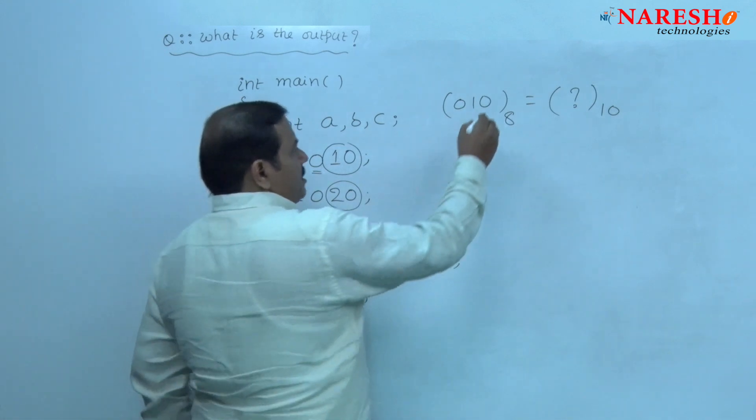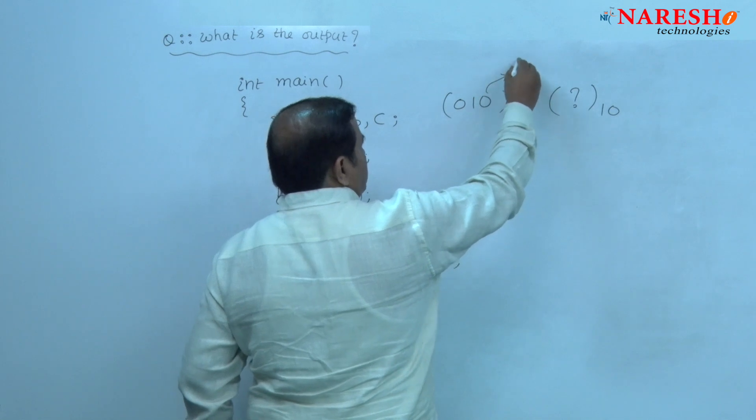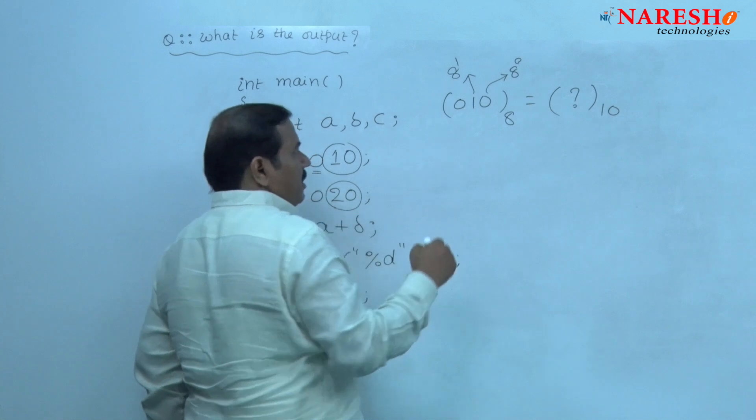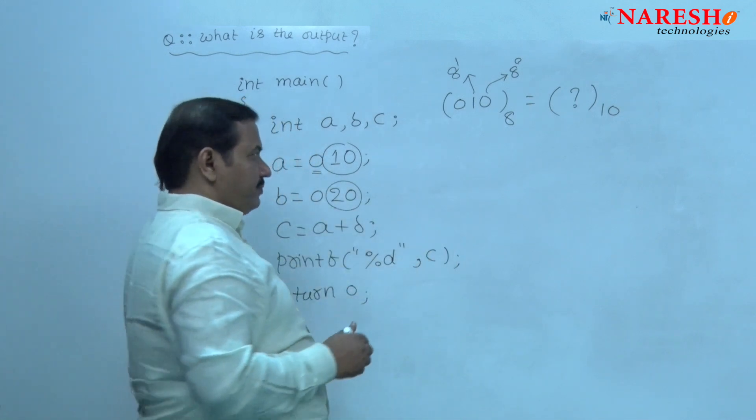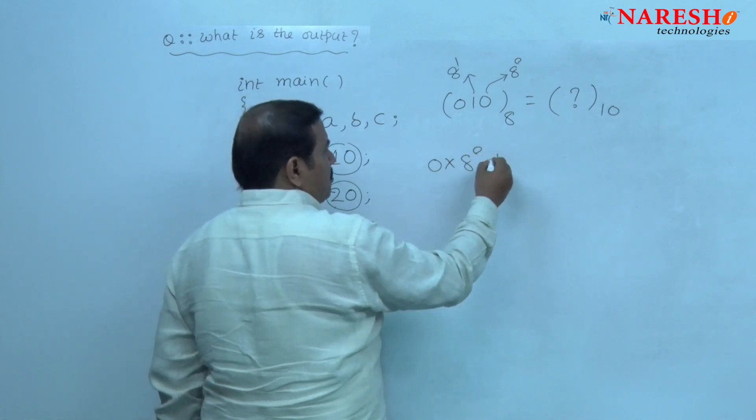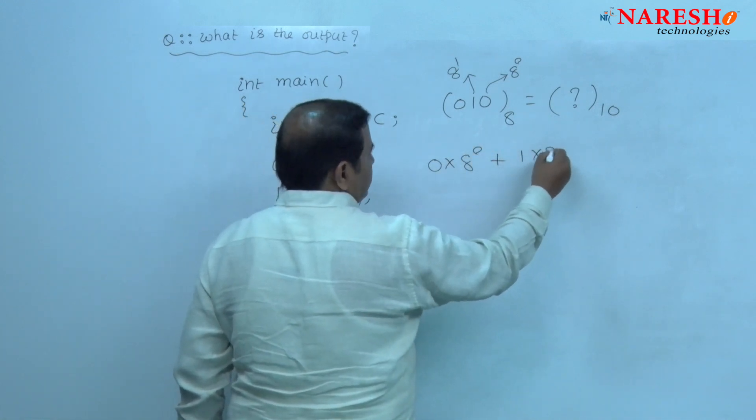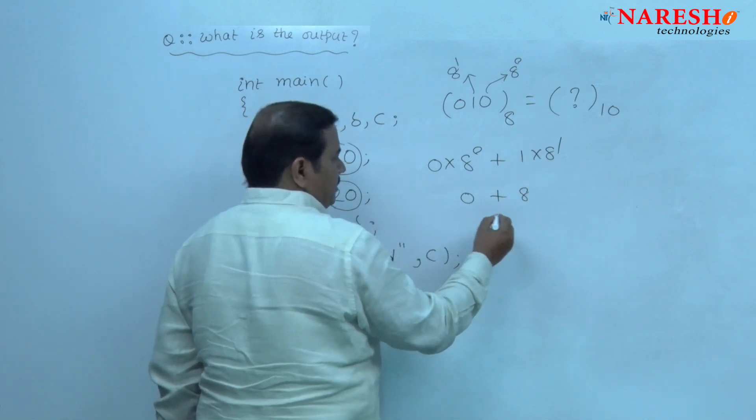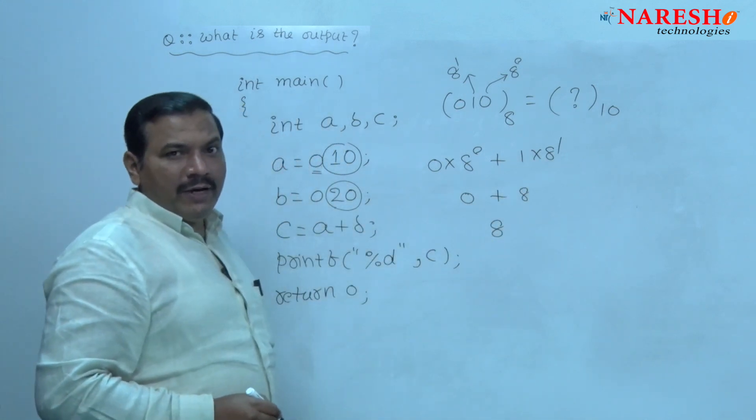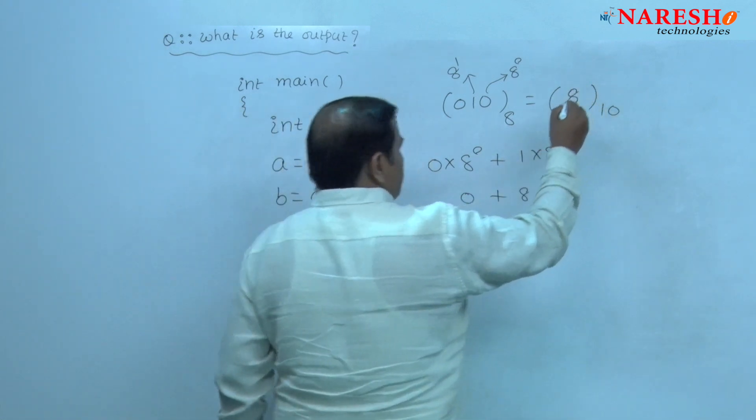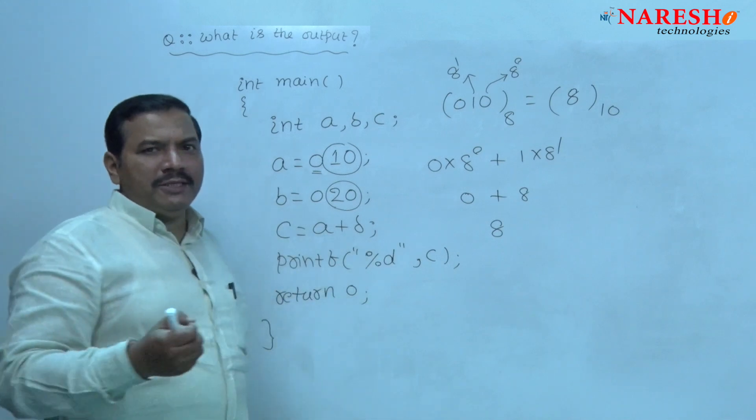In octal system, the weight of this 0 is 8 power 0, weight of this 1 is 8 power 1. Multiply each digit with its corresponding weight and then add. 0 into 8 power 0 is 0, 1 into 8 power 1 is 8. 8 is the value of this expression. Hence, the equivalent decimal value of this octal number is 8.